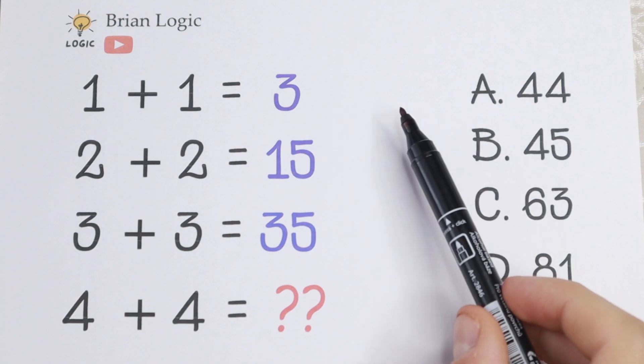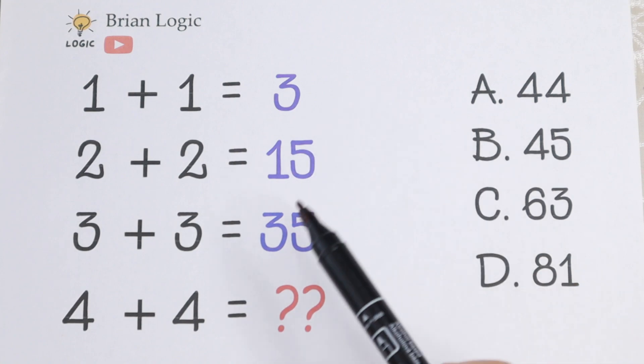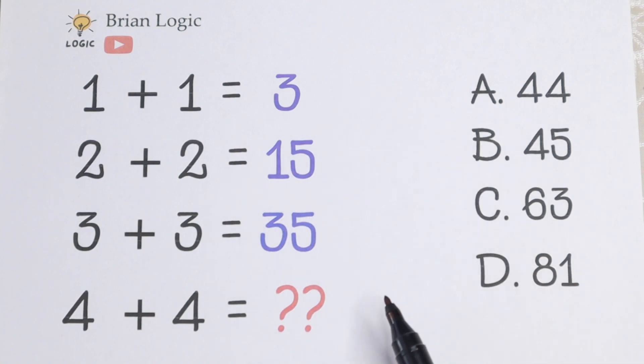We know that one plus one equals three, two plus two equals fifteen, three plus three equals thirty-five, and we need to find the last row: four plus four.